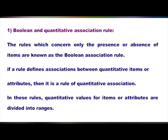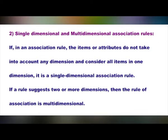The next type is single-dimensional and multi-dimensional association rules. If in an association rule the items or attributes do not take into account any dimension and consider all items in one dimension, then it is called a single-dimensional association rule. If a rule suggests two or more dimensions, then the rule of association is multi-dimensional.